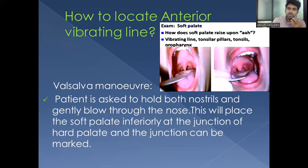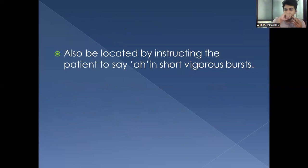To examine the anterior vibrating line, the patient is asked to make a vigorous 'ah' sound, allowing observation of the soft palate movement. The most anterior portion to which the soft palate moves, typically a cupid bow shape, marks the anterior vibrating line. It can also be located by instructing the patient to say 'ah' in short bursts.